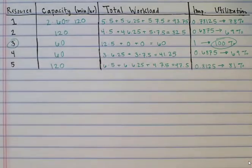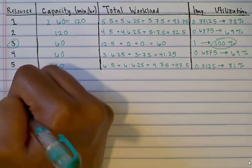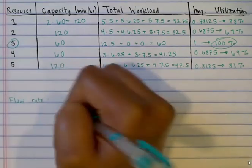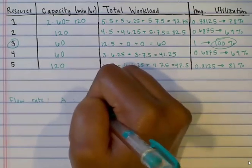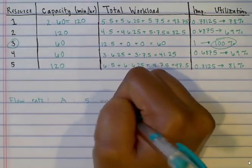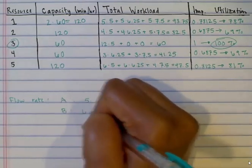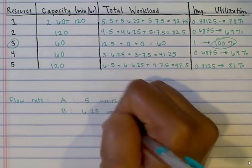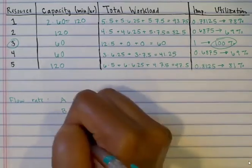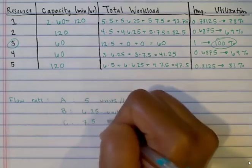Finally, to determine the flow rate for each product, note that the highest utilization is less than or equal to 100 percent, so this process is demand-constrained. This means that the flow rate is determined by demand. So, as we calculated above, the flow rate for product A is 5 units per hour, for product B it is 6.25 units per hour, and for product C it is 7.5 units per hour.